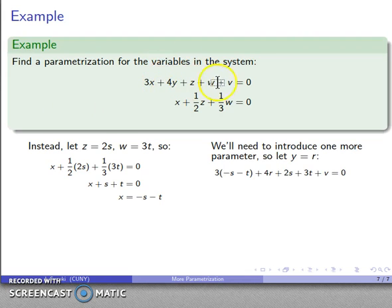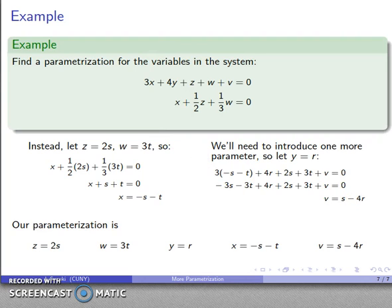Now I have my other equation here. I have a parameterization of z, w, and x. I still have two variables left, y and v. So I need to let one of them be a parameter. Because I want to avoid fractions, I'll let y equal r. I drop those in: 3x, there's my parameterization for x; 4y becomes 4r; z is 2s; w is 3t; v is still a variable. I will expand and solve. After all the dust settles, I get v equals s minus 4r. So now I have my parameterization: x equals minus s minus t, y equals r, z equals 2s, w equals 3t, v equals s minus 4r.